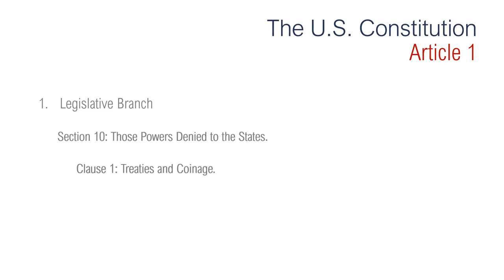Section 10 is regarding those powers denied to the states. In Clause 1, regarding treaties and coinage, it states no state shall enter into any treaty, alliance or confederation, grant letters of mark and reprisal, coin money, emit bills of credit, make anything but gold and silver coin a tender in payment of debts, pass any bill of attainder, ex post facto law or law impairing the obligation of contracts, or grant any title of nobility. Note that prohibiting state laws impairing the obligation of contracts was intended to protect creditors at the time. Shays' Rebellion — an attempt to prevent courts from giving effect to creditors' legal actions against debtors — occurred only one year before the Constitution was written.